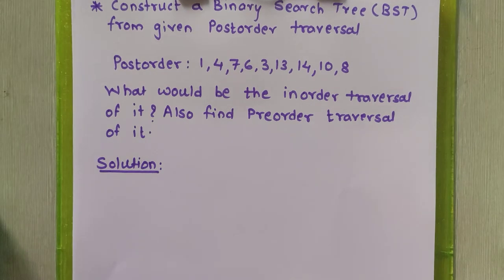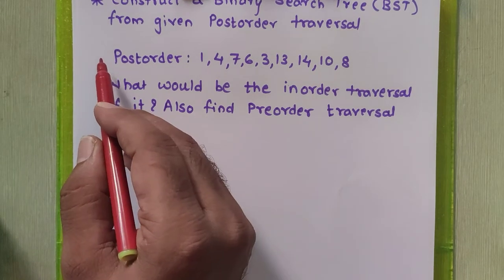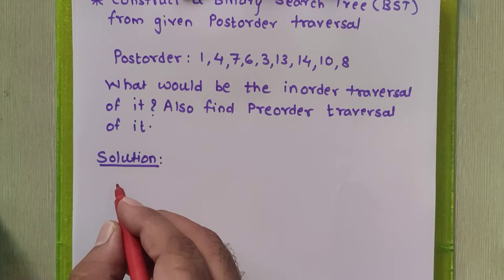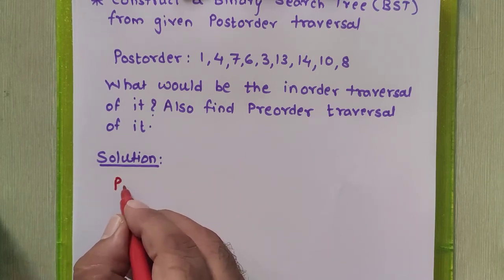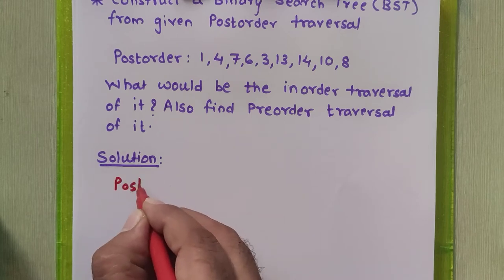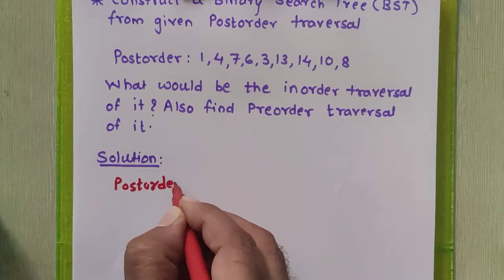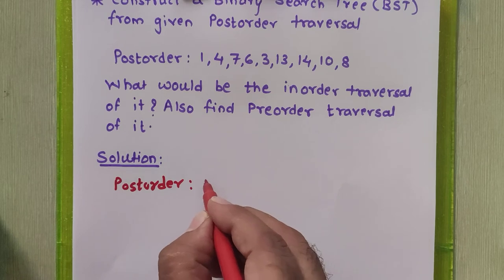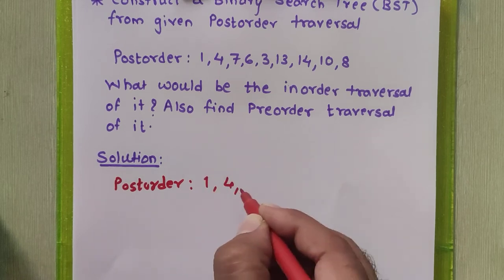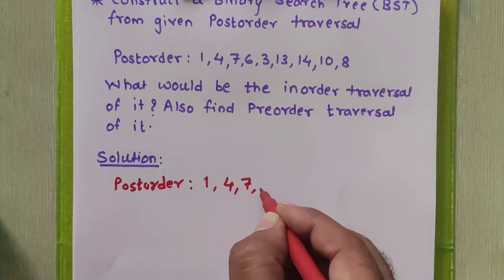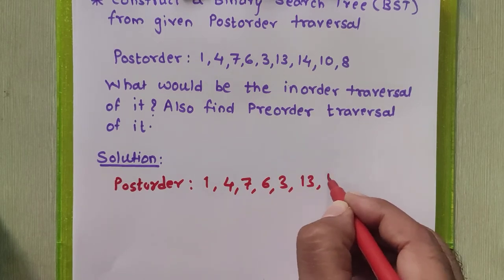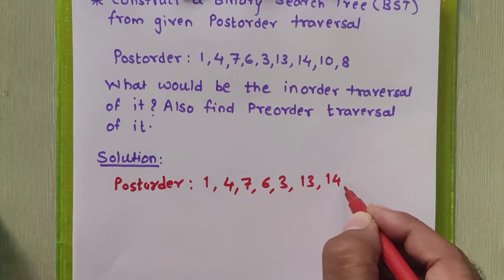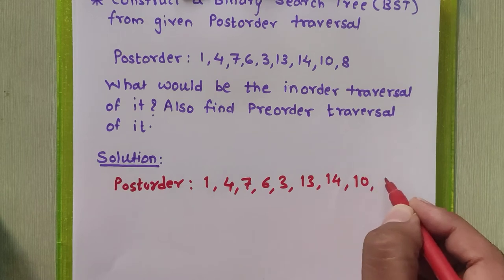In this problem the post order traversal sequence is given to us. We will copy that post order traversal sequence as it is. The elements are 1, 4, 7, 6, 3, 13, 14, 10, and 8.